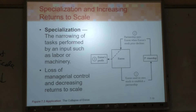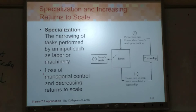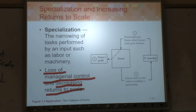In terms of specialization: if you increase your market and get more customers, you can use more advanced technology to produce what you want. But as you expand more and more, there will be issues in management — loss of managerial control — and decreasing returns to scale. As production and capacity increase, there will be management issues. That's why when a company grows too big, it's not easy to maintain control.